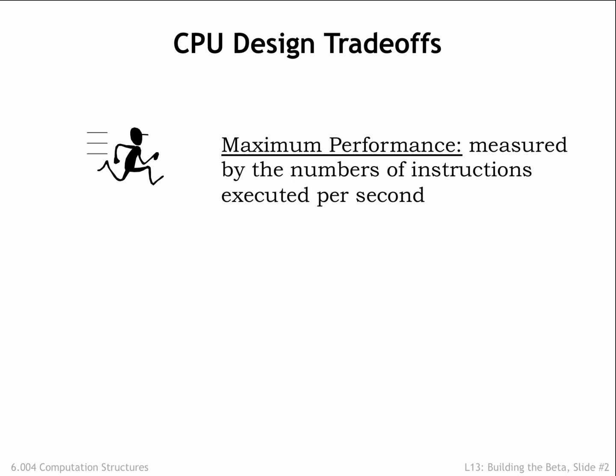When the Intel 8080 was introduced in 1974, it executed instructions at 0.29 MIPS, or 290,000 instructions per second, as measured by the Drystone benchmark. Modern multi-core processors are rated between 10,000 and 100,000 MIPS.